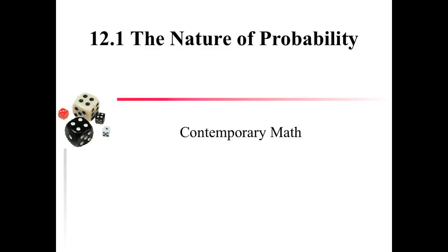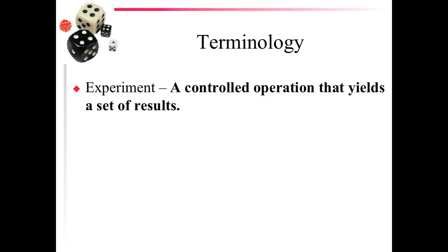Some terminology we're going to be using here. The first one is experiment, and this is a controlled operation that yields a set of results. An experiment can be rolling a die, rolling five dice. It can also be flipping a coin. It could be shooting a basketball. Lots of different things can be experiments.